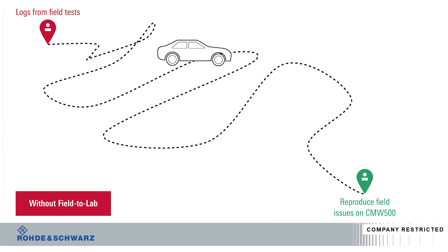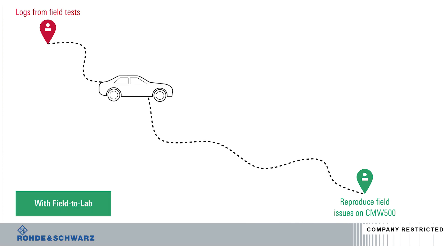Without Rohde & Schwarz Field to Lab, trying to recreate the exact field environment manually will take a lot of time and effort, which increases cost and reduces efficiency. But with Field to Lab, not only are the cost and time of reproducing field issues dramatically reduced, but you will be able to reproduce more field issues in lab, thereby increasing team efficiency and productivity.